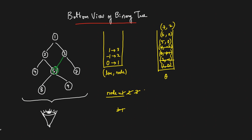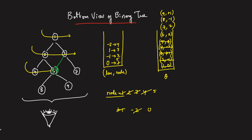Next, we get node 4 with line minus 2. So in the map on key minus 2, we store 4. Node 4 has no left and no right, so it's done. Next, we get node 5 with line 0. The map entry for line 0 gets replaced with 5. Node 5's left child is 8 at line 0 minus 1, which is minus 1. Its right child is 9 at line 0 plus 1, which is plus 1. Node 5 is done.